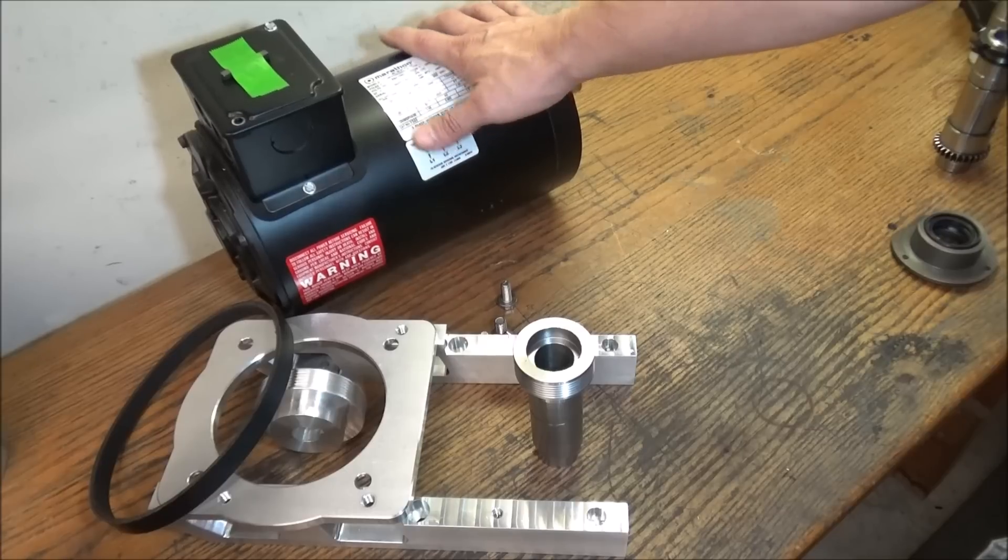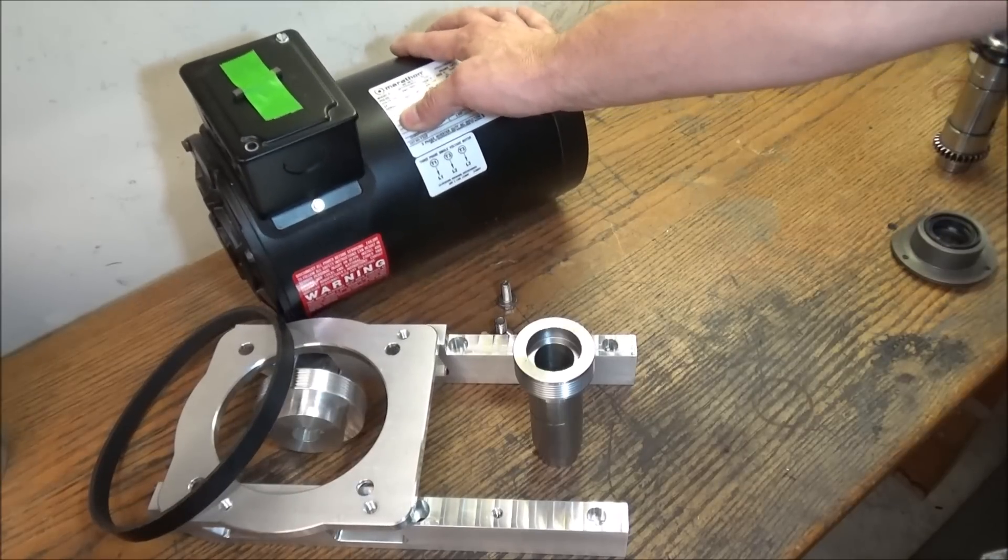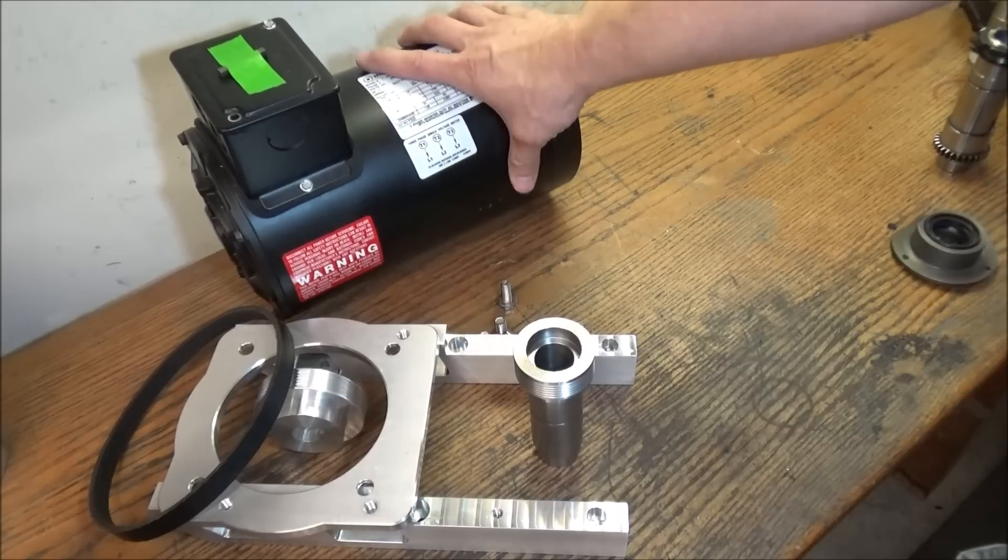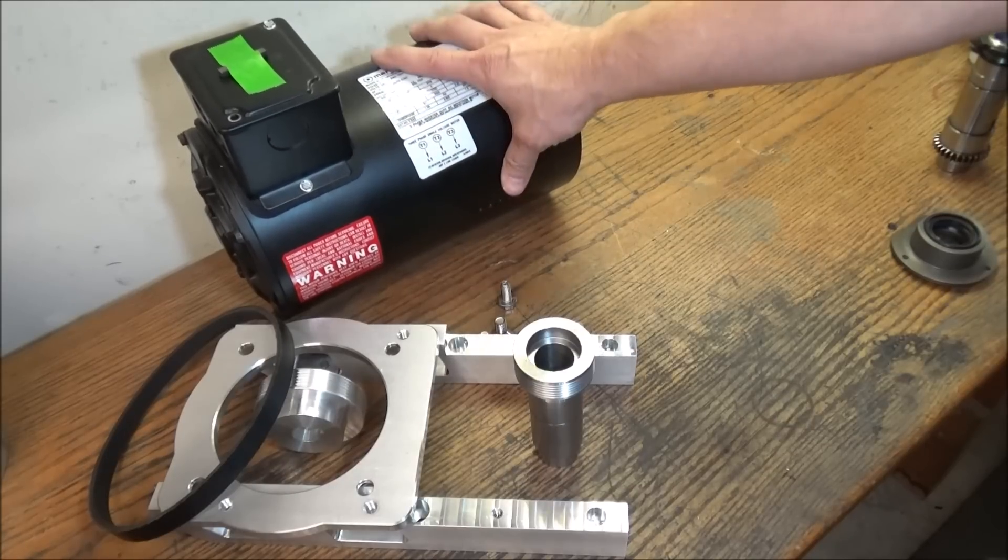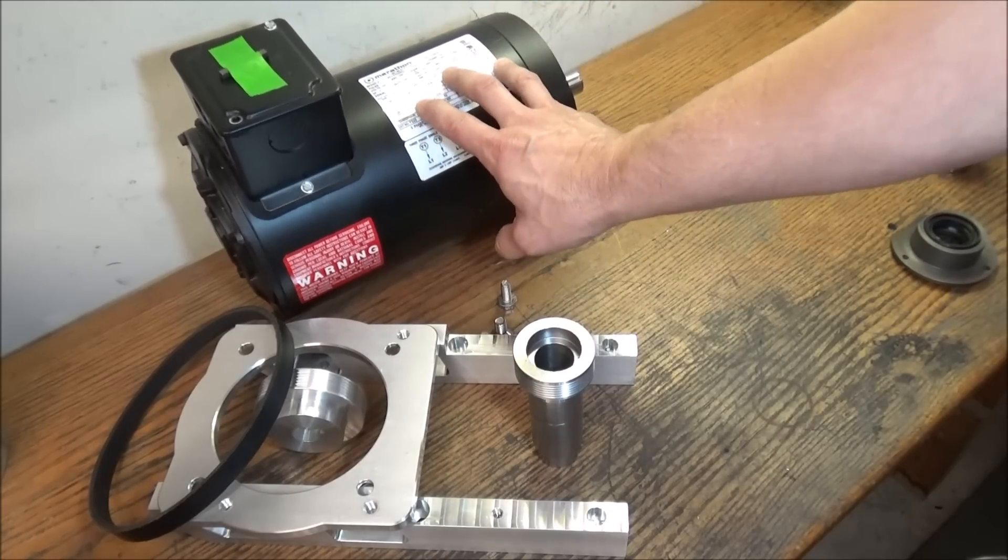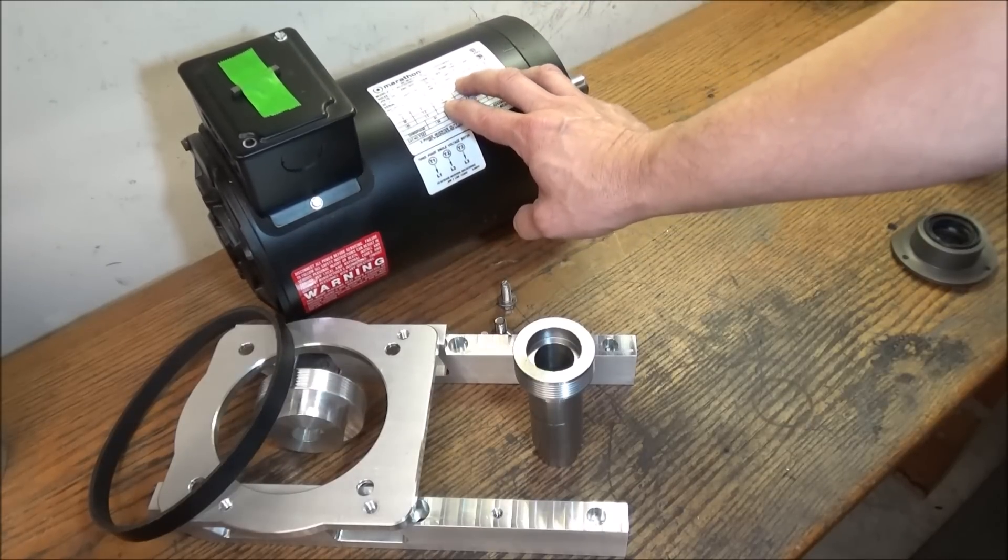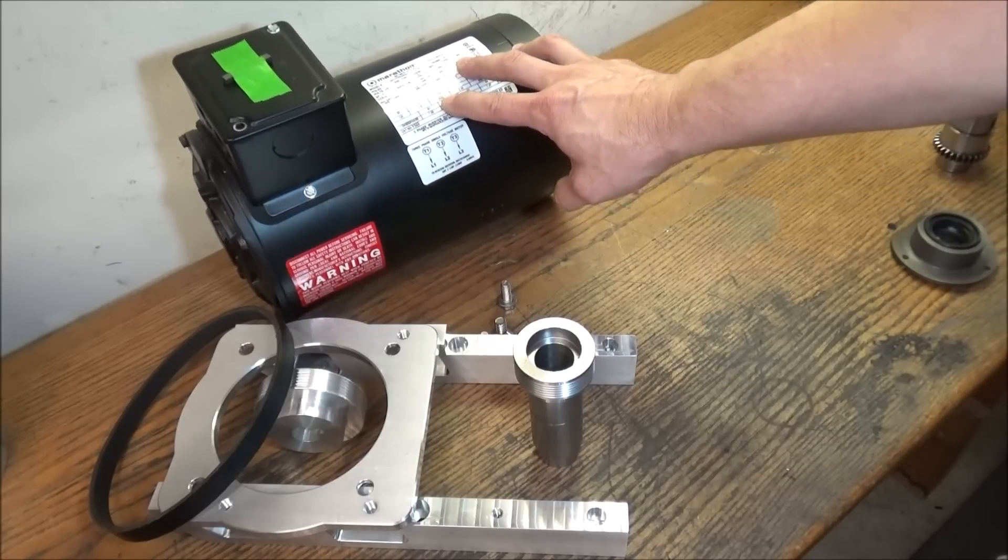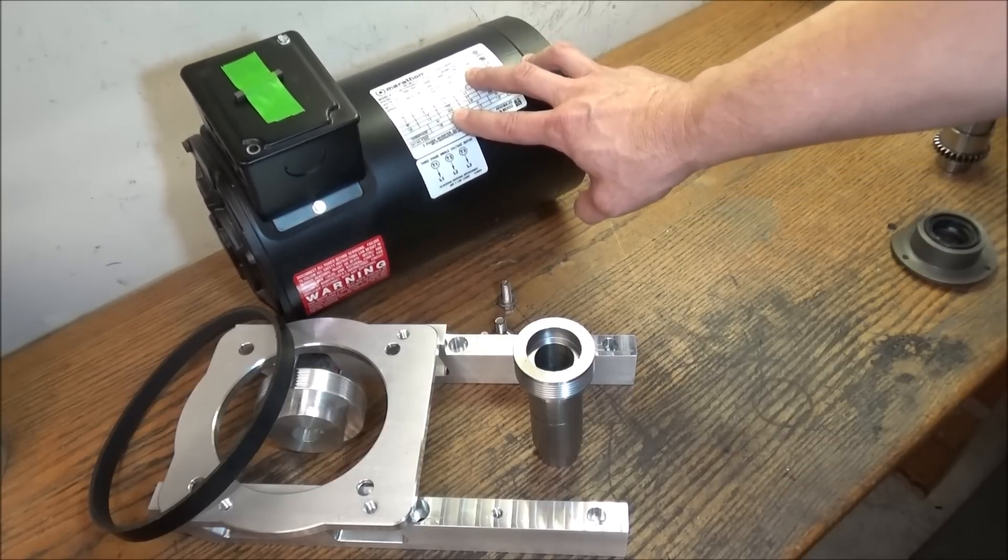Also this motor is rated the max safe speed of 5400 RPMs. This is an inverter duty motor. You can overdrive this motor. It says right here on the nameplate that at 60 Hertz it's 1755 RPMs. At 120 Hertz it's 3500 RPMs.